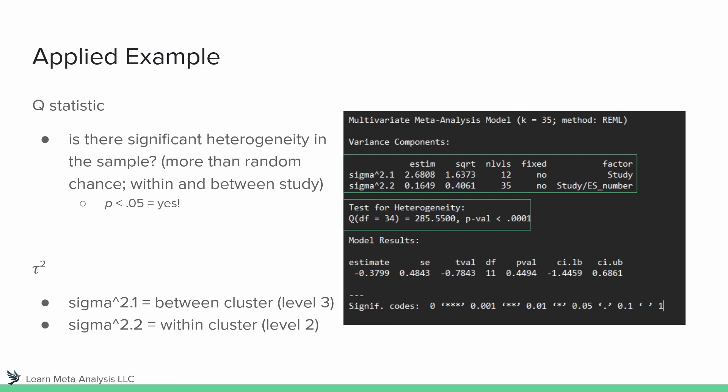When we look at sigma 2.2, that is our within-cluster estimate — all of the effect sizes within each study. That is a much smaller estimate: 0.16. So between studies we have an estimate of 0.68, and within studies we have an estimate of 0.16. Keep those numbers in mind, because next we're going to look at I-squared.